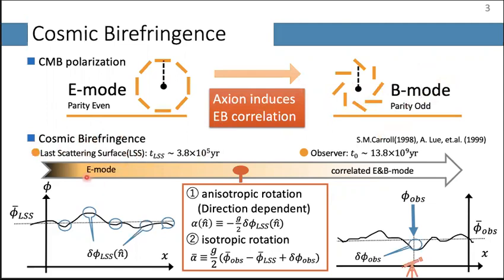At the time of last scattering, we only have E-mode polarization. At that time, the axion has some average field value, plus fluctuations that depend on location. Different locations correspond to different directions on the sky. So this spatial difference in axion fluctuation results in a direction-dependent rotation angle, which is called anisotropic birefringence. At the observer point, the observer has some axion field value phi-obs, which is generally different from the average field value at last scattering, since we also have fluctuations at the observer.